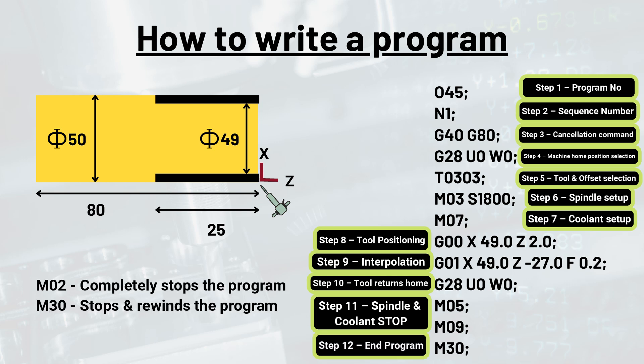Now to end the program, we have two choices: M02 and M30. Command M02 completely stops the program, whereas M30 stops and rewinds the program. So it is recommended to use M30 always unless otherwise.